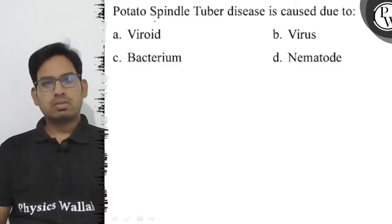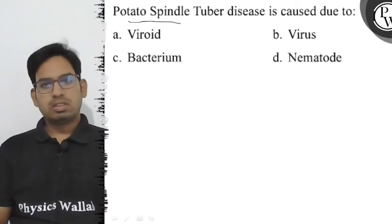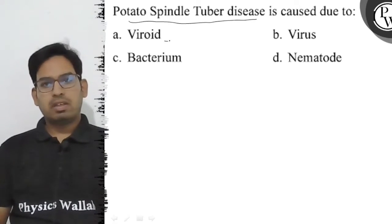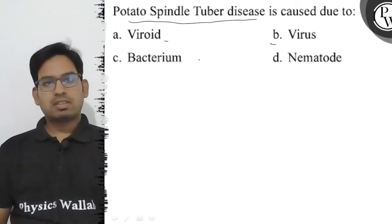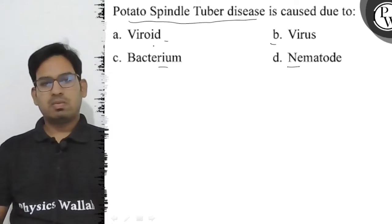Hello guys, let's see this question. Potato spindle tuber disease is caused due to: option A, viroid; option B, virus; option C, bacterium; option D, nematodes.